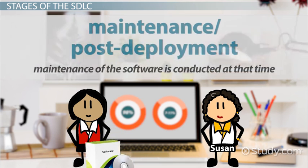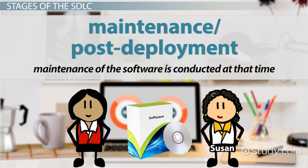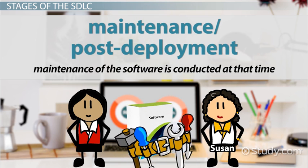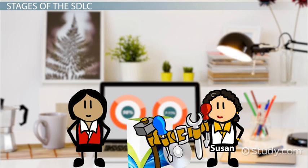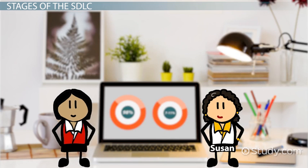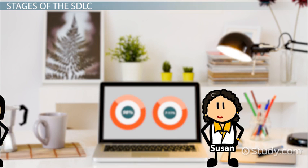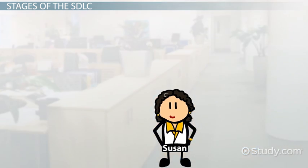The final stage is Maintenance or Post-Deployment. Once the product is in use, the customer may experience technical issues and maintenance of the software is conducted at that time. Now that Susan knows each stage of the SDLC, she is ready to provide instructions to her project team.